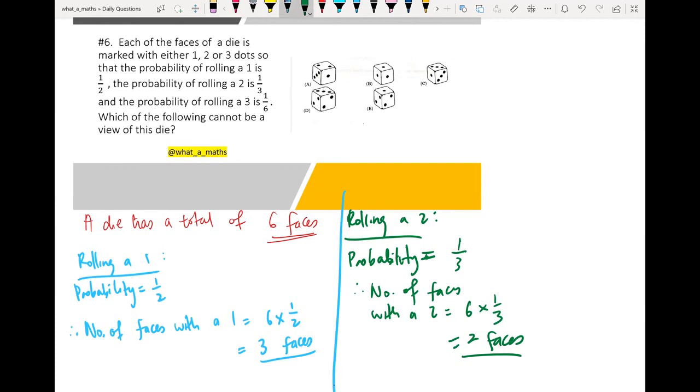And last one, rolling a 3. The probability to get a 3 is equal to 1 over 6.